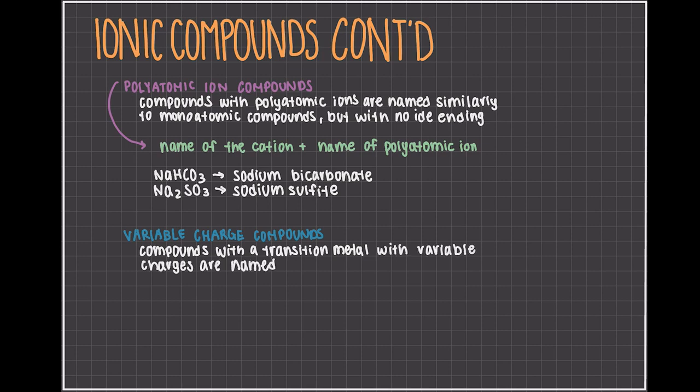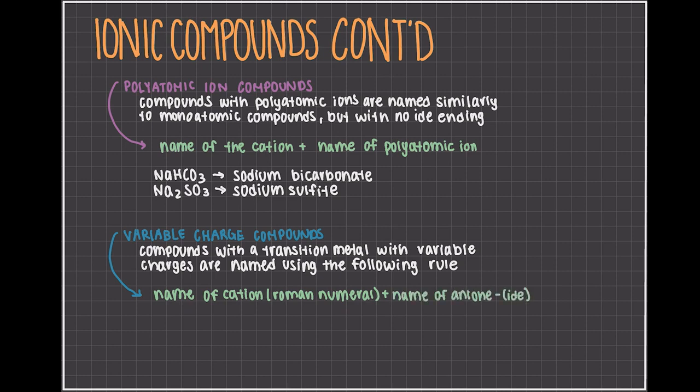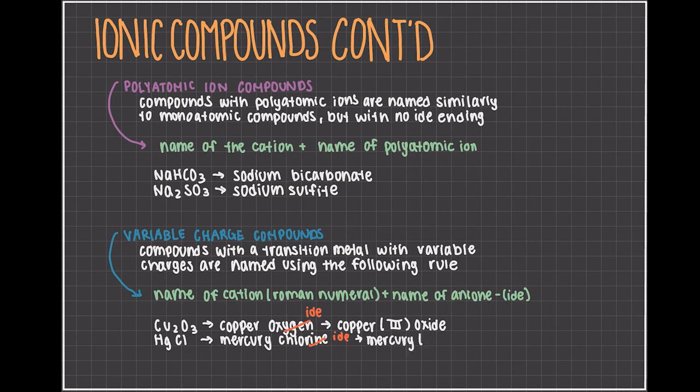You start with the name of the cation, and then in parentheses, you put the Roman numerals of its charge. Then, the name of the anion with the 'ide' ending, like before. Cu2O3 then becomes copper(III) oxide, and HgCl would become mercury(I) chloride. Now, you might be wondering how we determine the charges.